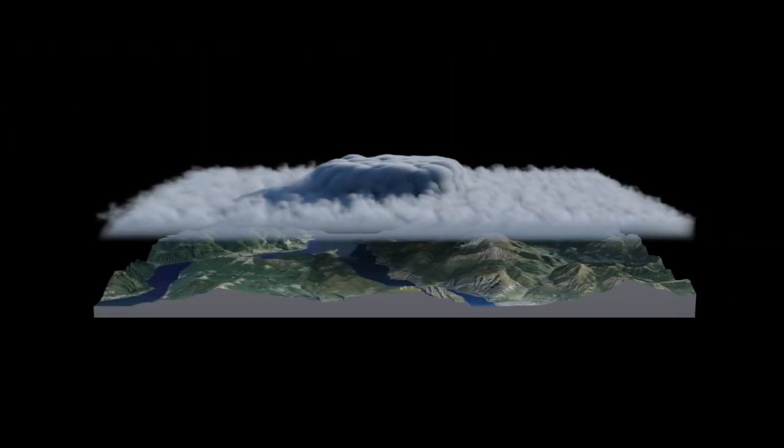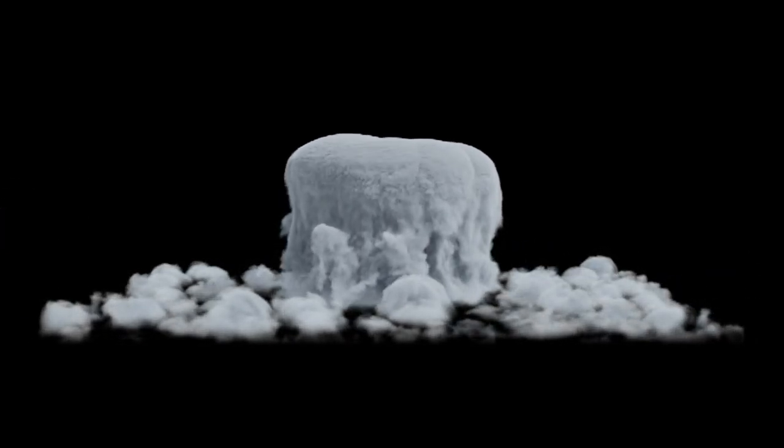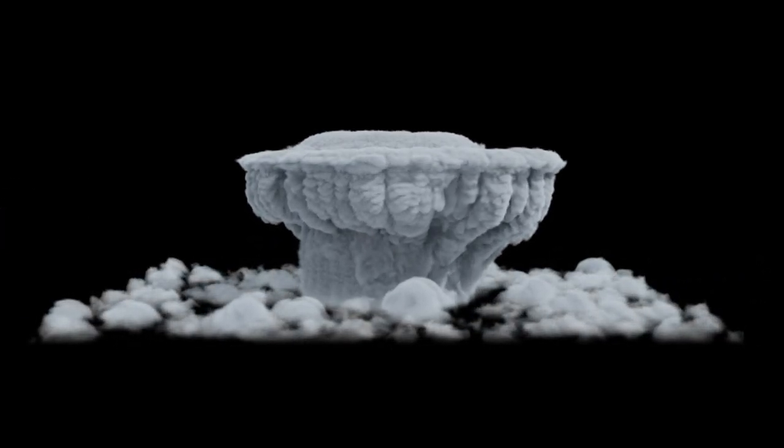By accurately formulating buoyancy and temperature distribution, clouds can be produced such as cumulonimbus. User control is offered through a lightweight set of physical parameters, for example ground humidity, to experiment with different conditions. Here comes the rain!